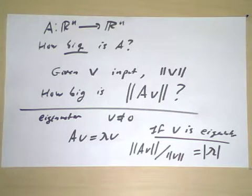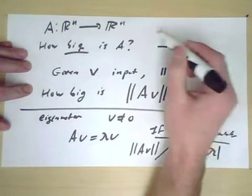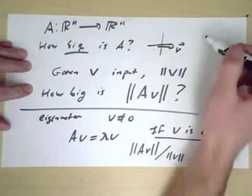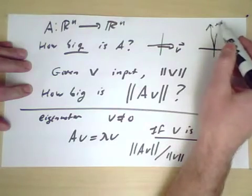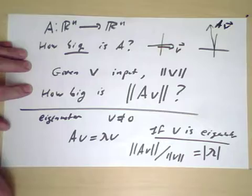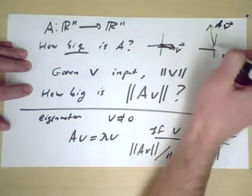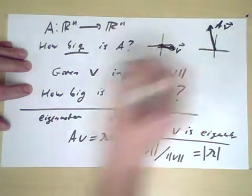But what if you just talk about any old vector that might be moved by the matrix? For example, perhaps in the input, this input becomes that output. V is clearly not an eigenvector because it's changed direction. But I can still talk about how this output is twice as long as this input.